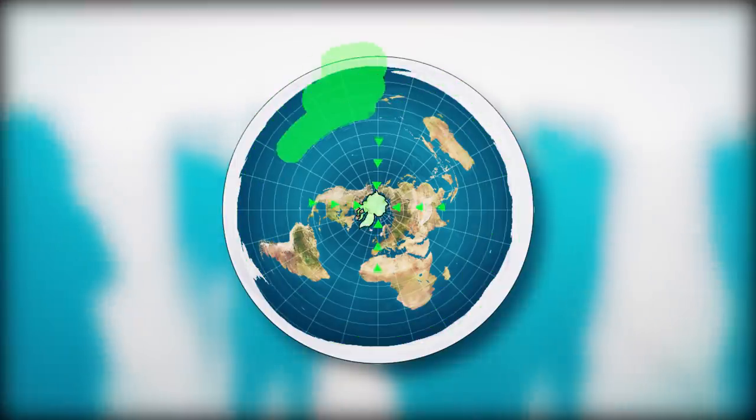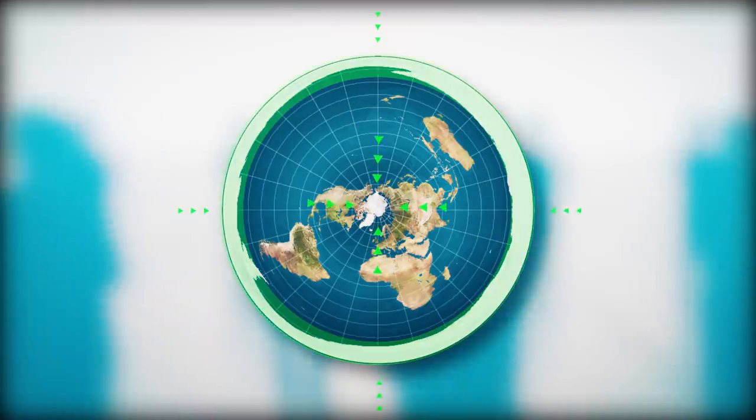As you can see, it's shaped like a disc with a north pole at the center. Antarctica is depicted as a wall of ice around the outer edge of the disc. If the Earth were shaped this way, then what would change?